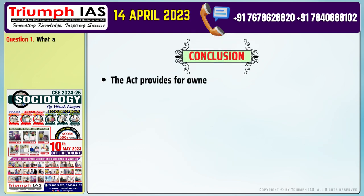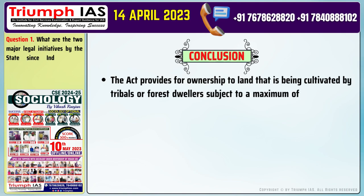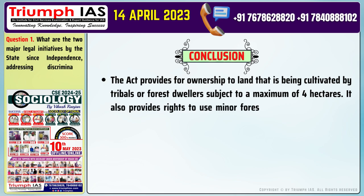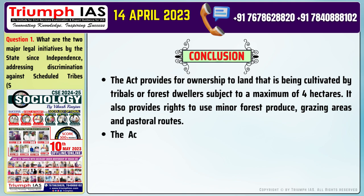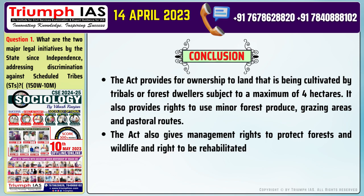Conclusion of the answer: The Forest Rights Act provides for ownership of land being cultivated by tribal or forest dwellers, subject to a maximum of four hectares. It also provides rights to use minor forest produce, grazing areas, and pastoral routes. The Act also gives management rights to protect forests and wildlife, and the right to be rehabilitated in case of illegal eviction or forced displacement.